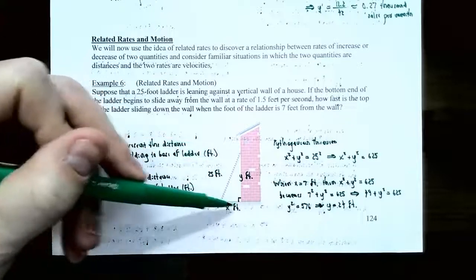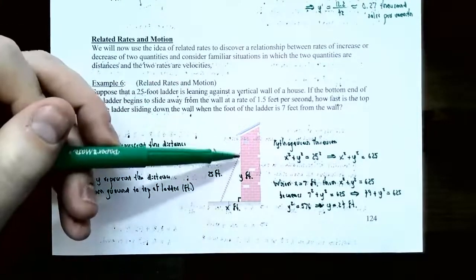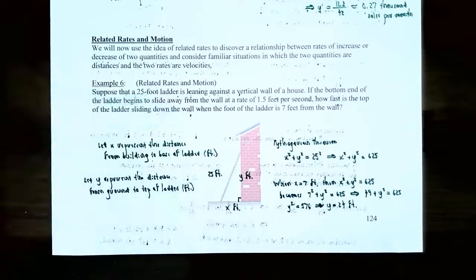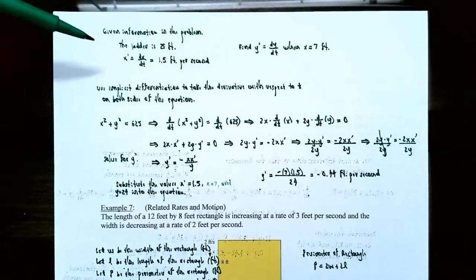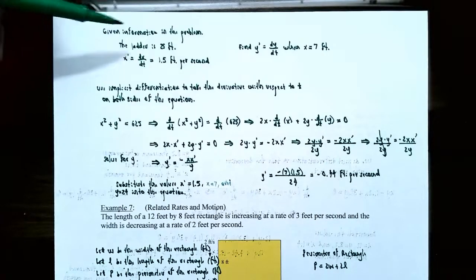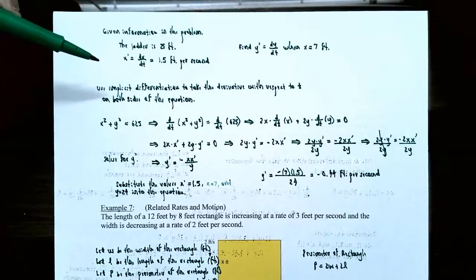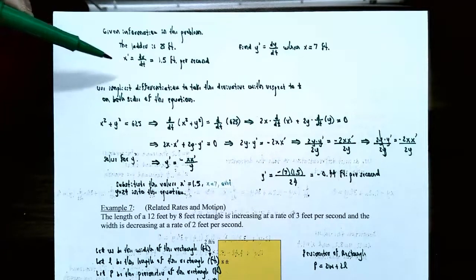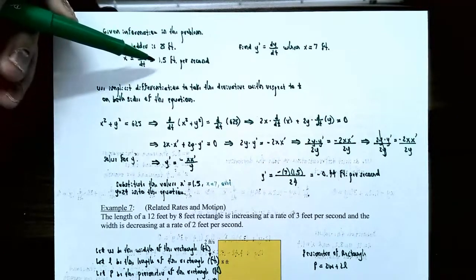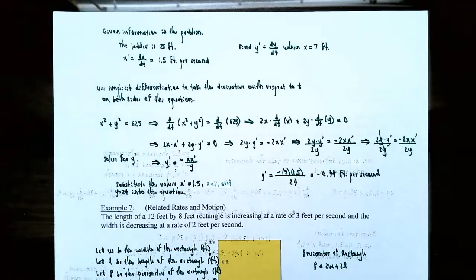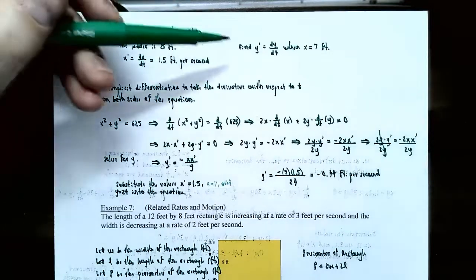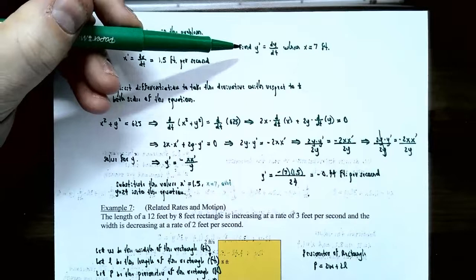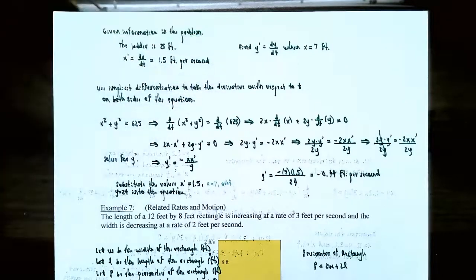So when the base of the ladder is 7 feet from the wall, the top of the ladder is 24 feet above the ground. The problem also tells us the ladder is sliding away from the wall at a rate, so X prime equals 1.5 feet per second — the horizontal distance is increasing 1.5 feet every second. We need to find Y prime, or dy/dt, when X equals 7 feet.